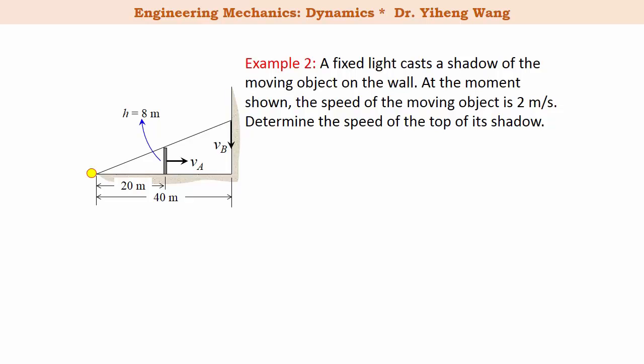Here is a different type of problem that also involves dependent motion. There is a plate with height of eight meters moving towards the wall, and a fixed light source casts its shadow on the wall. Obviously when the object moves, the top of its shadow moves as well. We know that at this instant the speed of the moving object is 2 meters per second, and we need to find the speed of the top of its shadow.